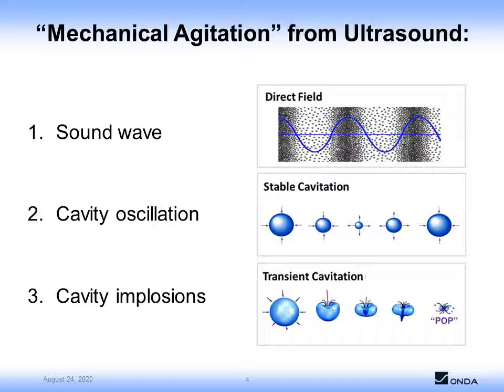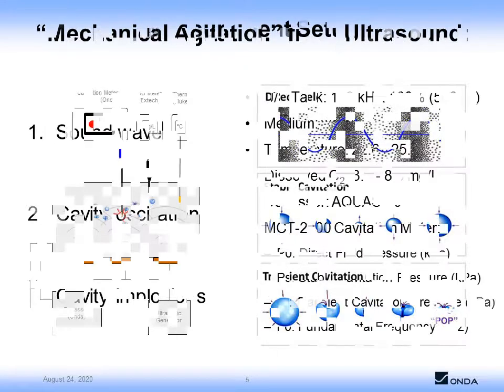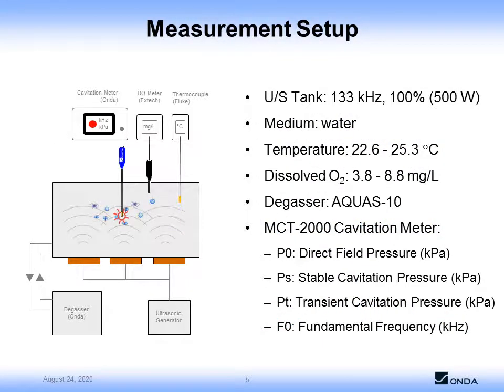These acoustic cavities exist in one of two states. They either oscillate in size and dimension, or above some pressure threshold these cavities collapse, known as transient cavitation. In this study, we take a closer look at how the level of dissolved gases affects the cavitation pressure.